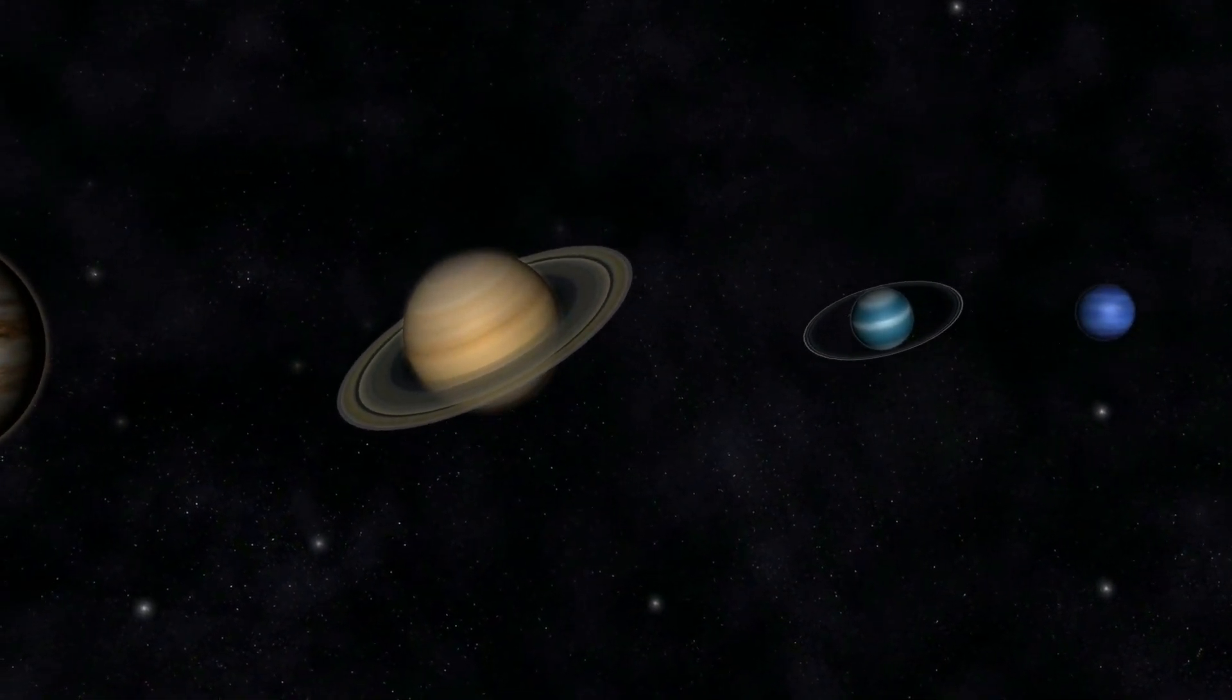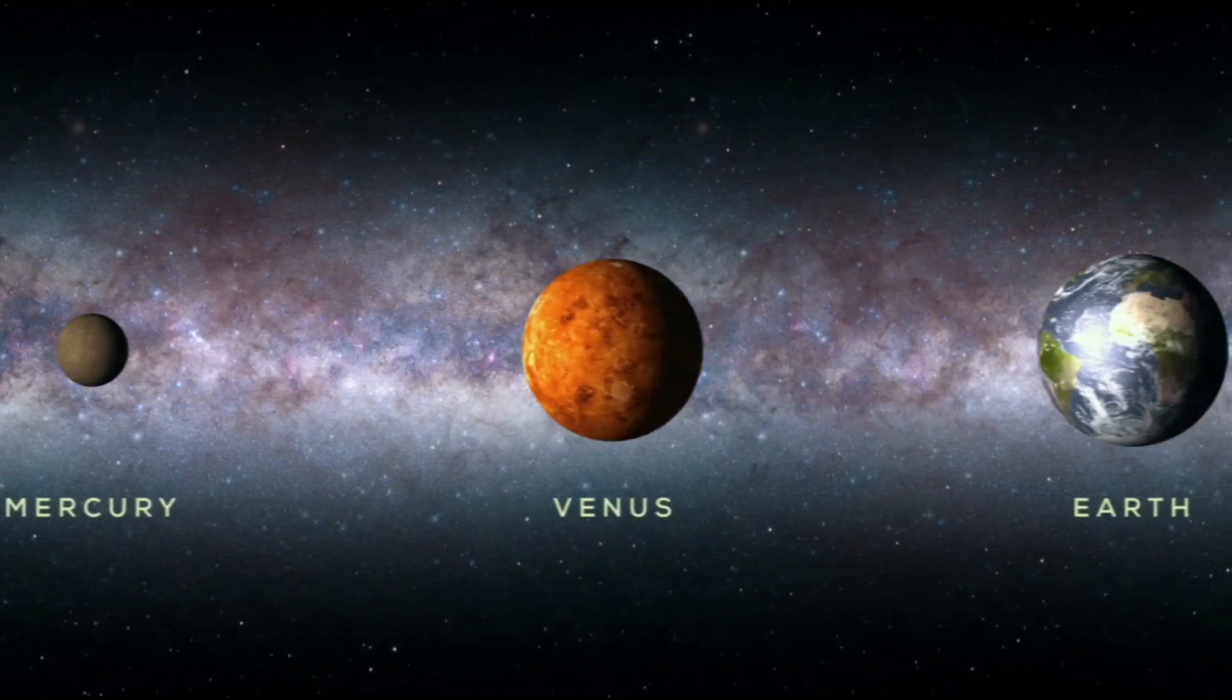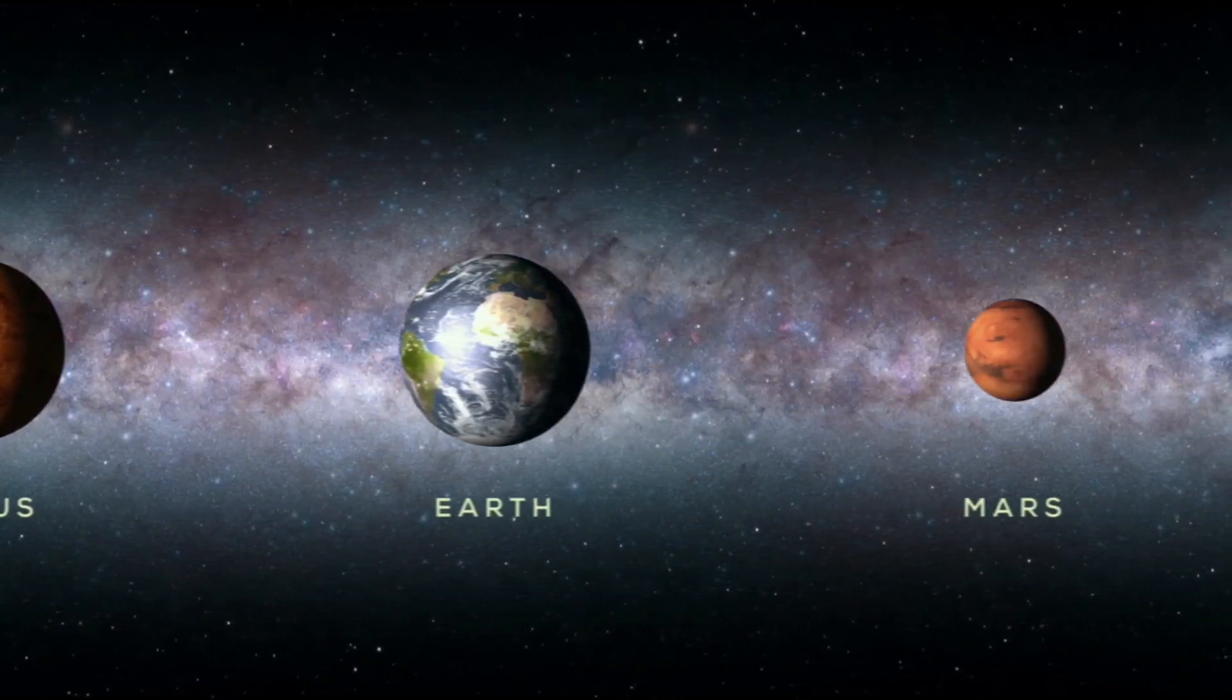First off we start with the four smaller rocky planets. Closest to the Sun is Mercury, then Venus, then Earth and Mars.